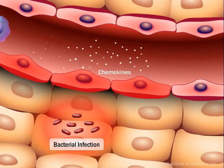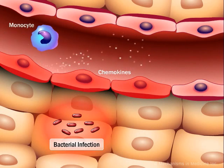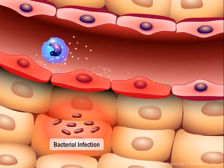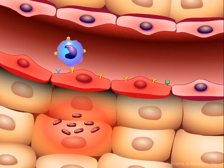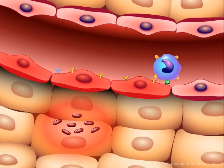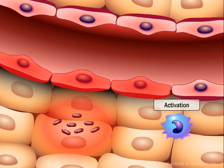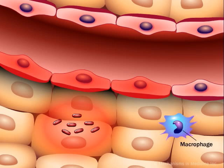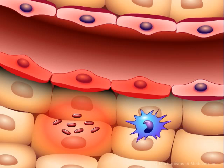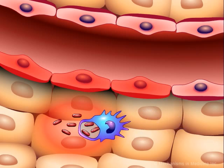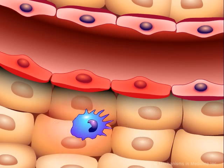Hyperglycemia also adversely affects the macrophage system. Under normal circumstances, circulating monocytes are attracted to sites of infection, roll, adhere, and then migrate into the subendothelial space. The monocyte then transforms into a macrophage, which is then activated by cytokines released by the bacteria. The activated macrophage then engulfs the bacteria.